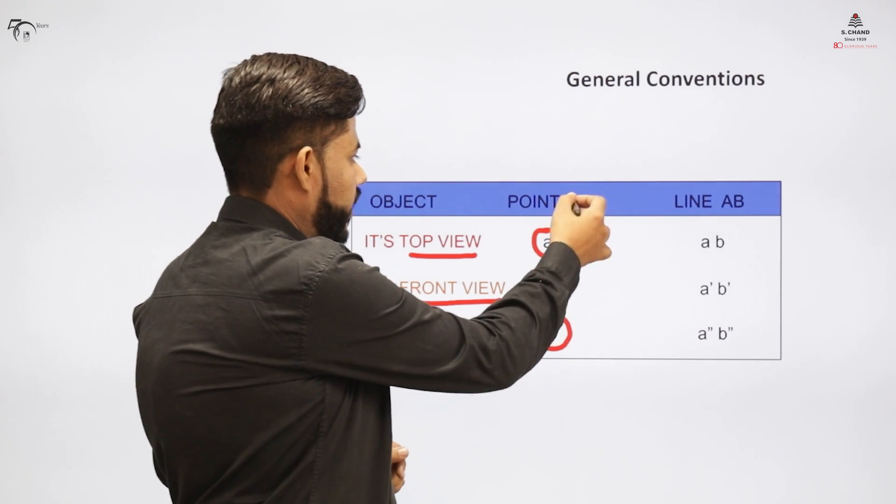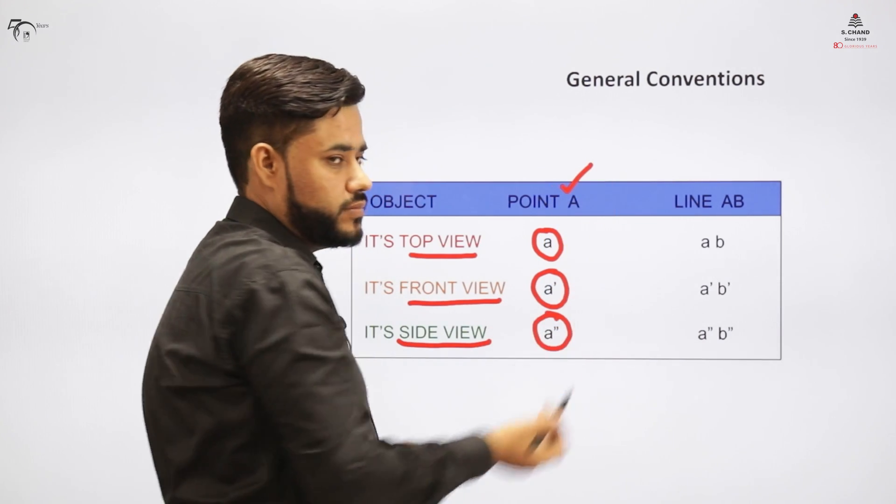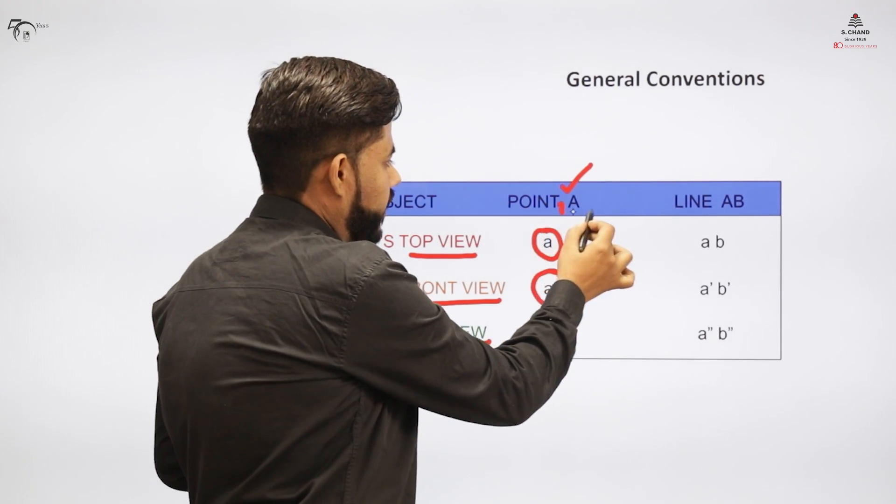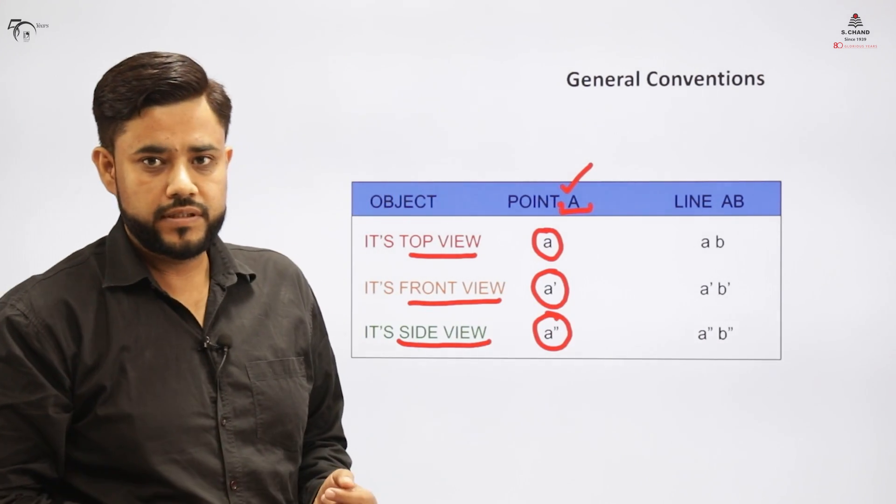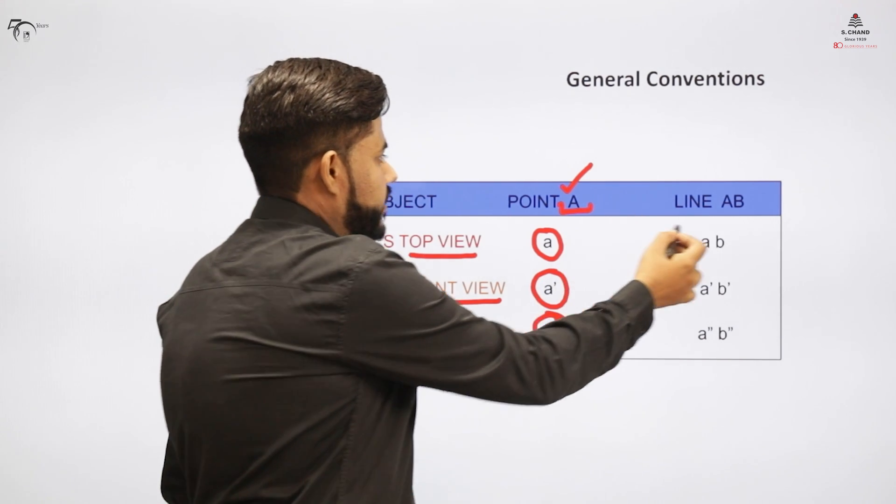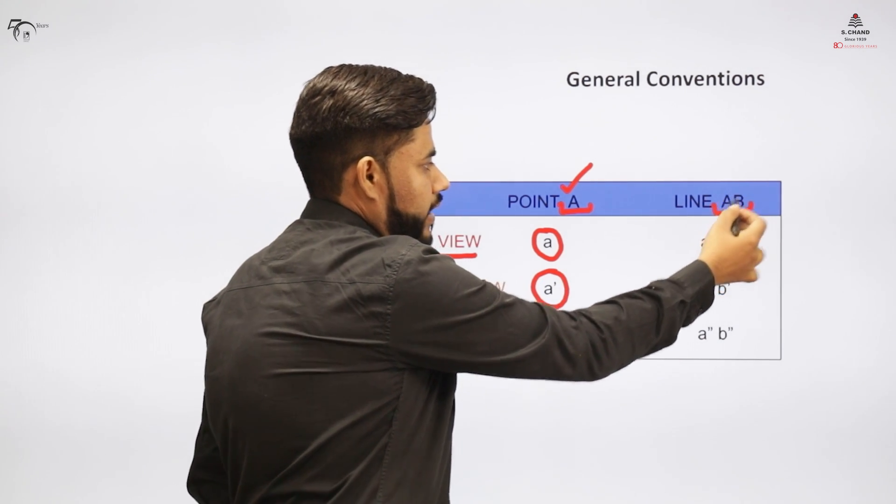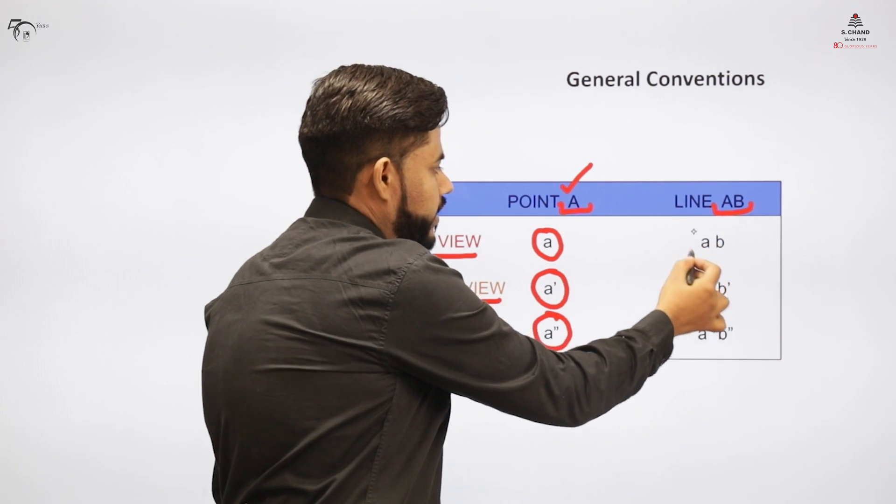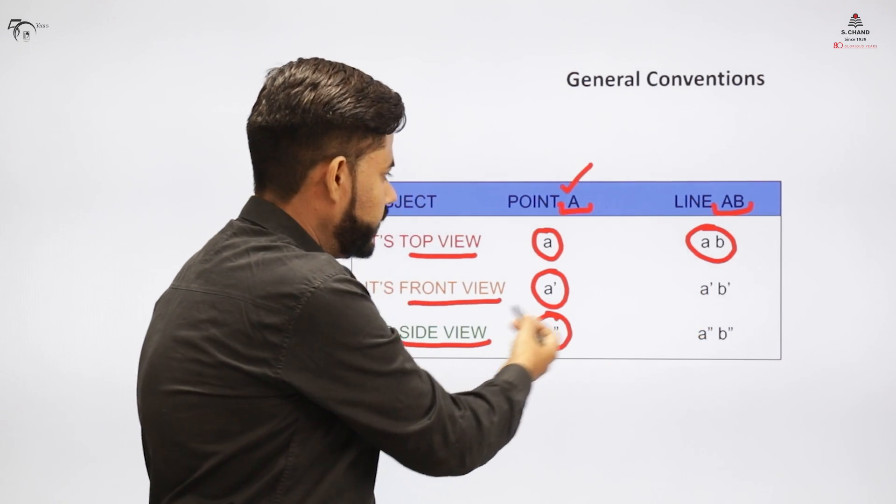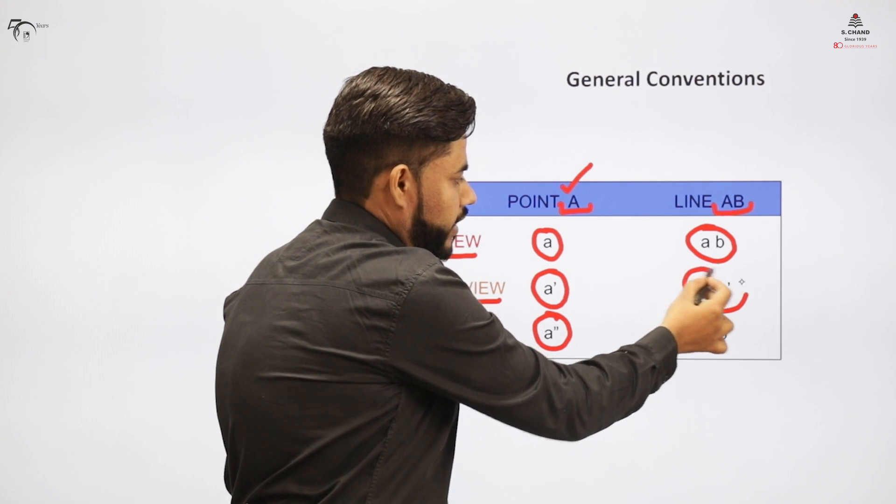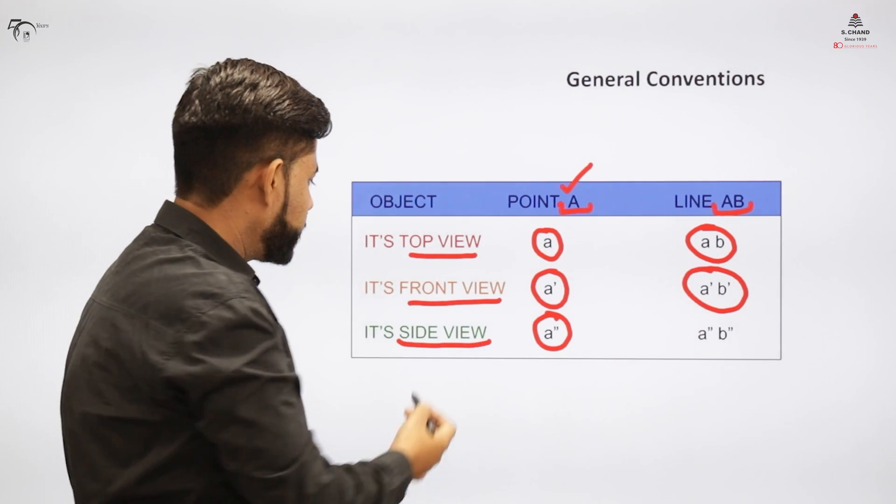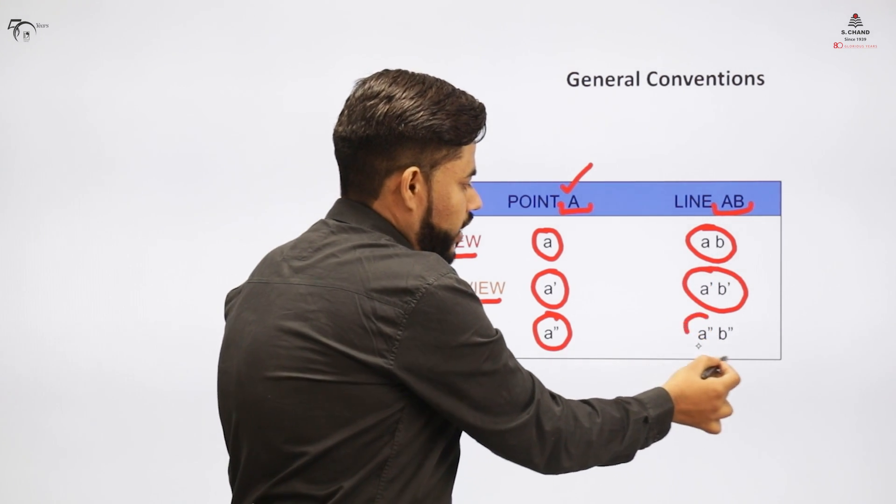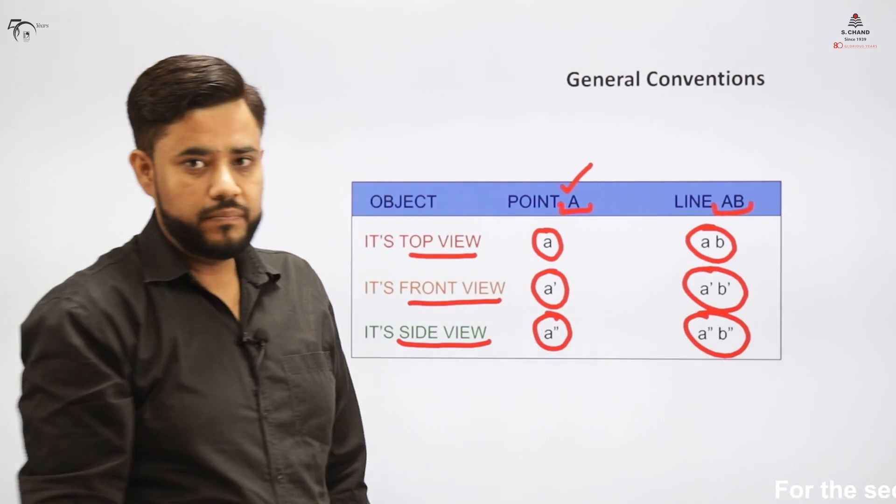This is for a point. If I want to indicate a point which is an object, it is indicated with a capital letter always as per general notation. If it's a line, the line has two points or two coordinates. For that, the top view is indicated without a dash, front view is indicated with a dash (a dash, b dash), and the side view is indicated as a double dash (a double dash, b double dash).